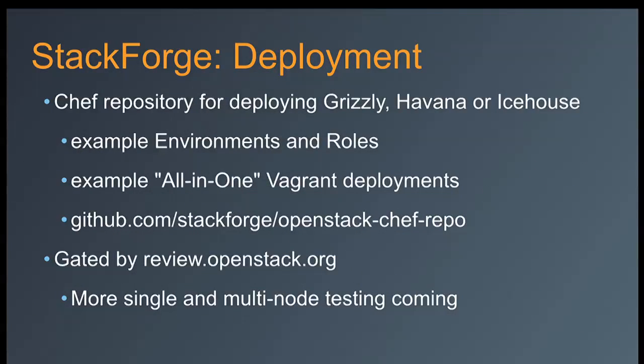For deployment we actually have a Chef repository — an OpenStack Chef repo on GitHub that has Vagrant files for deploying OpenStack. That's what we'll be walking through today. It has example environments and roles so you can see how to wire different pieces together. The Chef repo is also gated by OpenStack's review system, making sure actual code committed would stand up in OpenStack — at least a reference implementation. Right now it's mostly single node and small deployments.